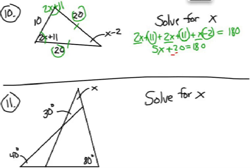Subtract 20 from each side. You have 5X equals 160. Divide each side by 5. X equals 32.